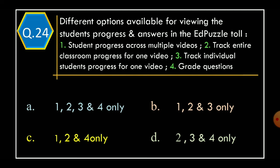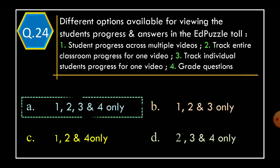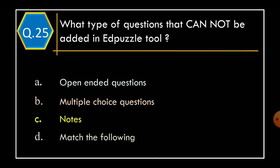Question 24: Different options available for viewing student progress and answers in the EdPuzzle tool — Statement 1: Student progress across multiple videos. Statement 2: Track entire classroom progress for one video. Statement 3: Track individual student's progress for one video. Statement 4: Grade questions. Select the correct option. Option A: Statements 1, 2, 3, 4 only. Option B: Statements 1, 2, 3 only. Option C: Statements 1, 2, 4 only. Option D: Statements 2, 3, 4 only. And the correct option is Option A: Statements 1, 2, 3 and 4.